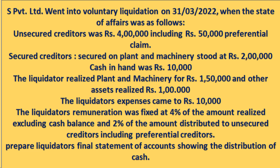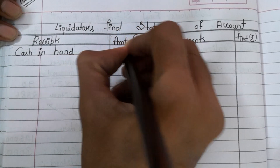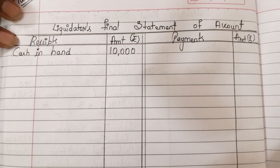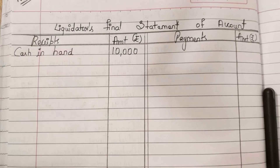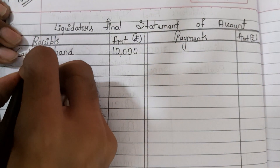Now first let us see what they have given. On the receipt side, we have to first take cash in hand, which is ₹10,000. Next, the assets realized — they have given values for two items. Let us take assets realized.